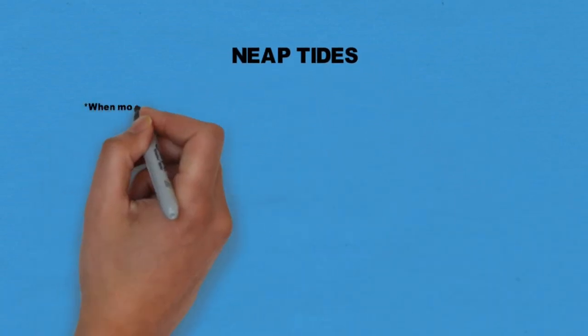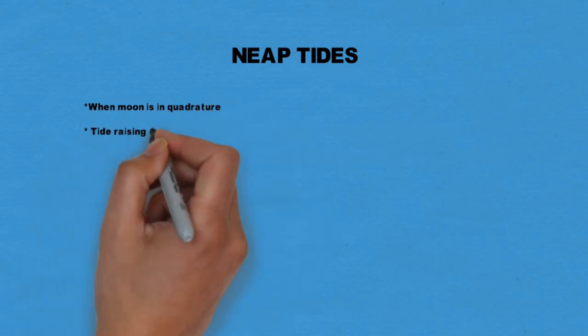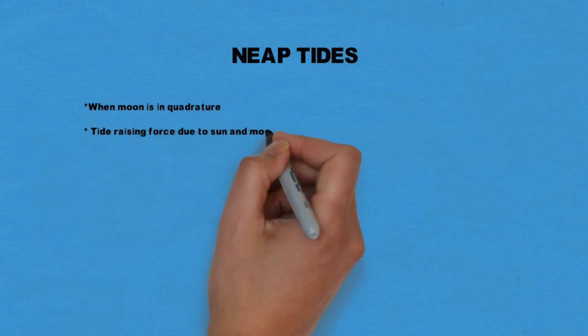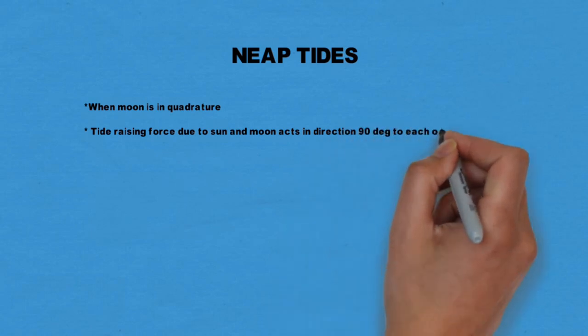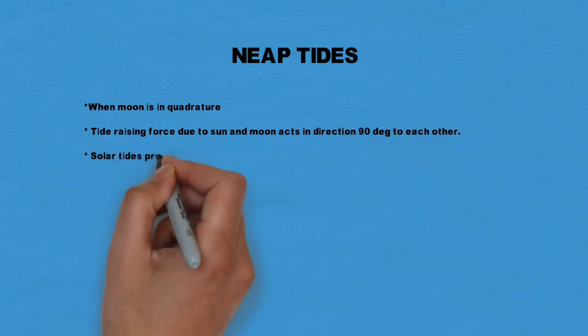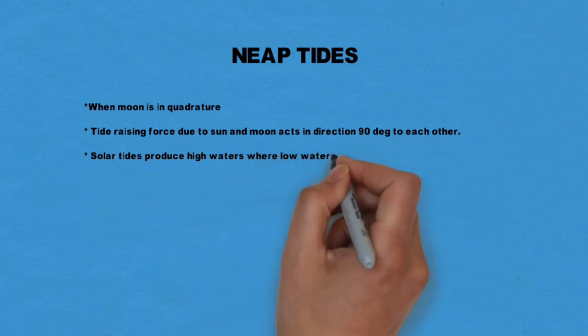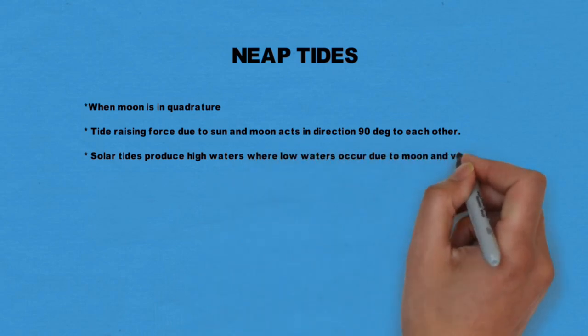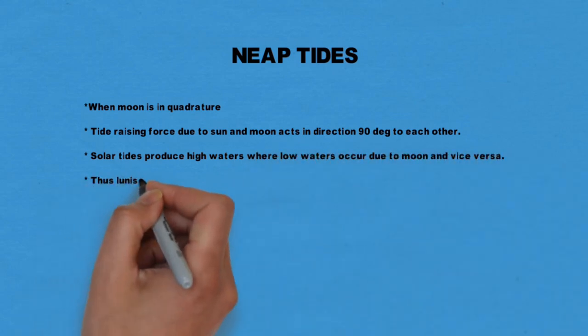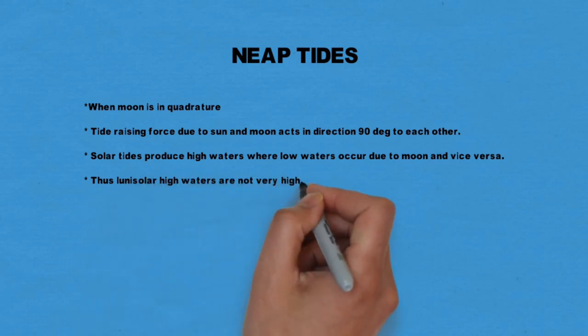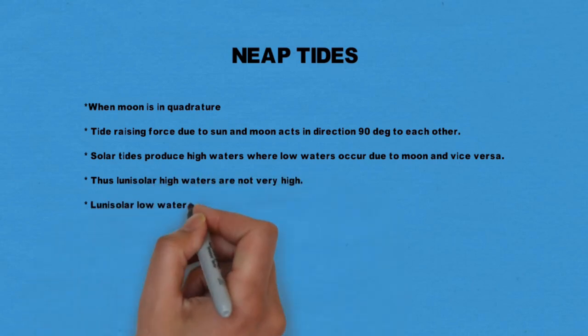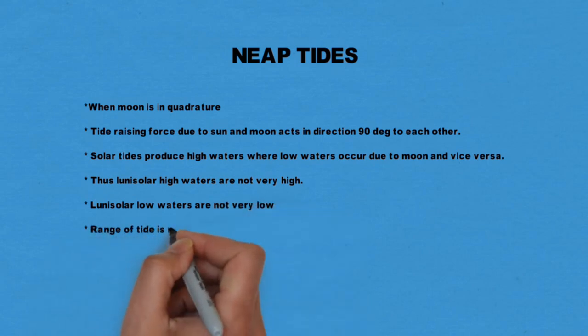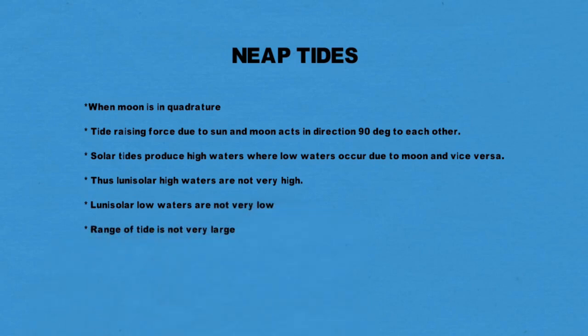Neap tides occur when the moon is in quadrature — when the tide-raising forces due to the sun and moon act at 90 degrees to each other. Solar tides produce high waters where low waters are produced by the moon. In this lunisolar combination, high waters are not very high and low waters are not very low, so the range of tide is not large.